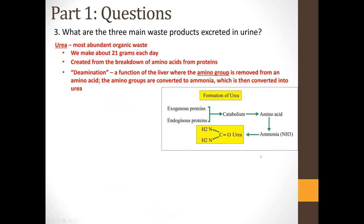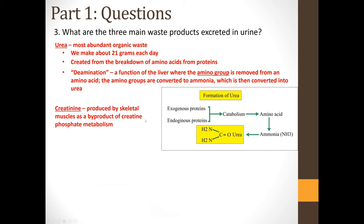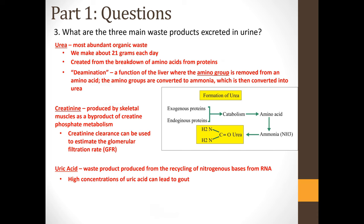The next major waste product is creatinine, produced by skeletal muscles as a byproduct of creatine phosphate metabolism. Creatinine clearance can be used to estimate the glomerular filtration rate. The third main waste product is uric acid, a waste product from the recycling of nitrogenous bases from RNA. High concentrations of uric acid can lead to a condition called gout.